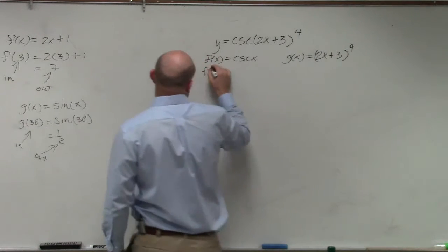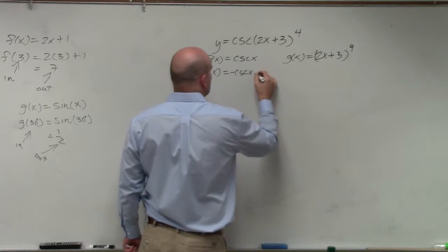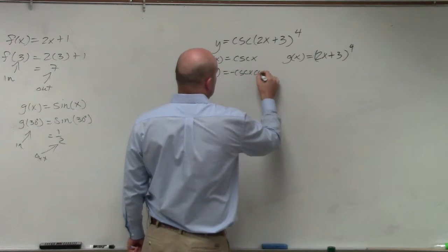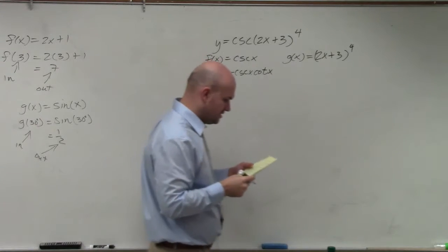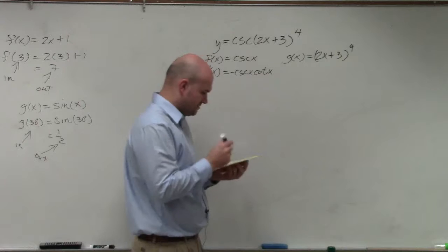Now, to find the derivative of f of x, that's going to be negative cosecant of x times cotangent of x. Just to verify, cosecant times cotangent. Times cotangent. Why do I write that in there?